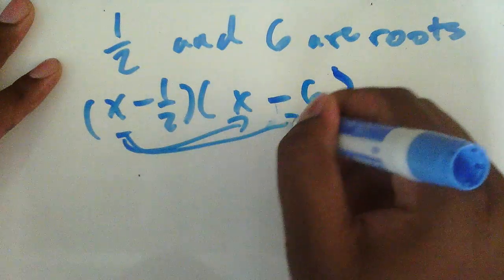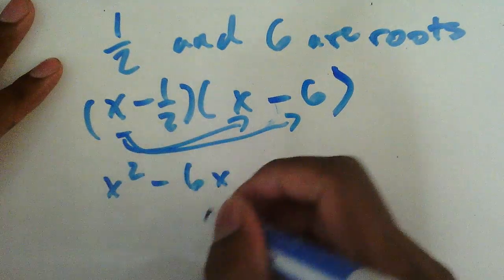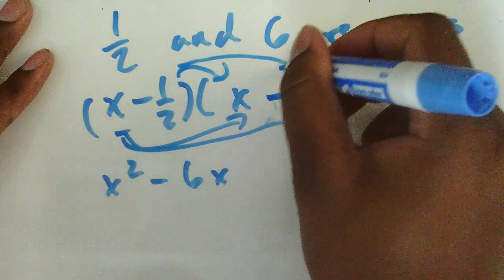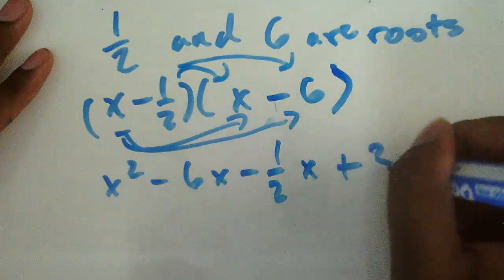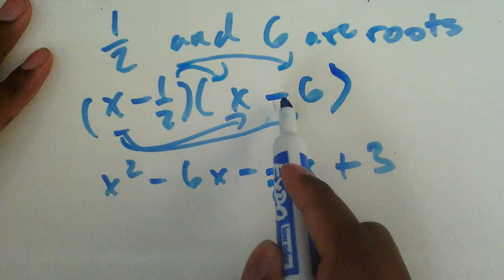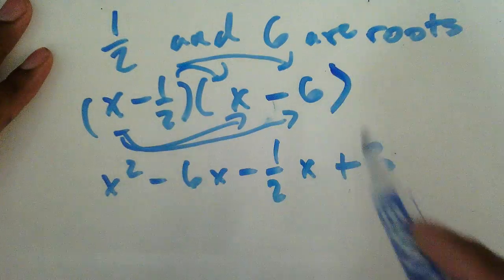I'm going to get x squared minus six x. Then multiply this one out, gives me negative one half x plus three. Remember, one half negative times negative is positive. One half of six is three.